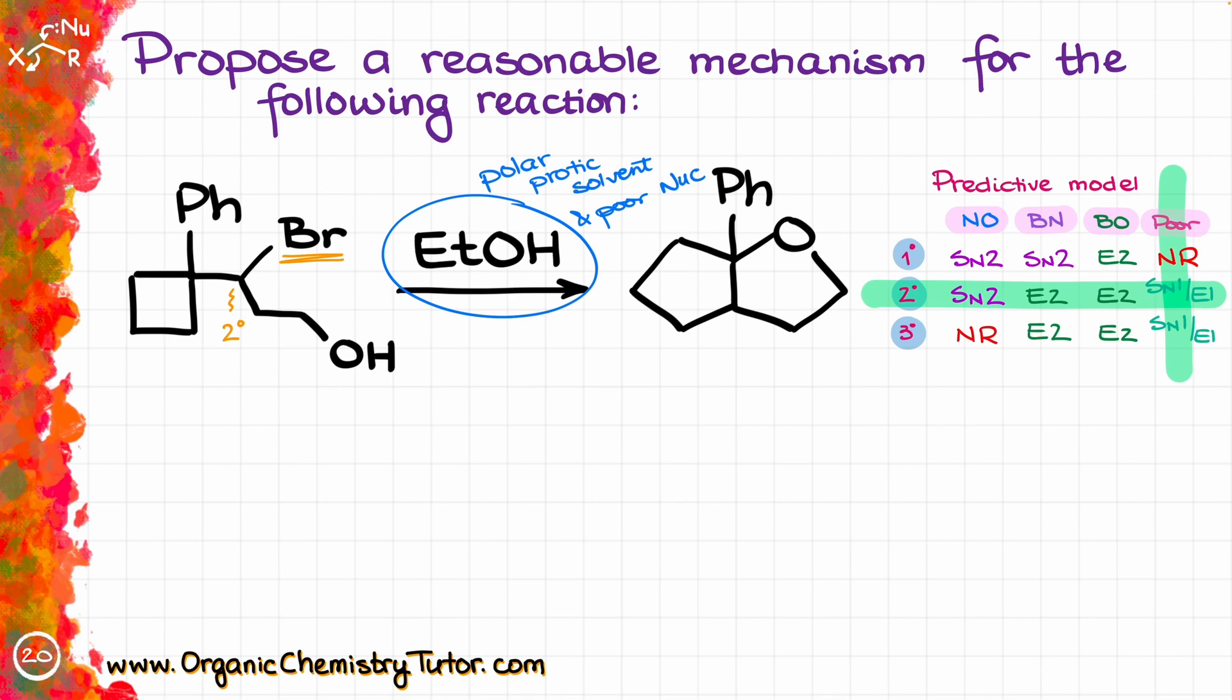In our case we have a secondary leaving group and poor base slash nucleophile, so we're looking at possible SN1 E1 style mechanism. Since we don't have any indication of elevated temperature, the most likely mechanism is SN1, which usually starts with leaving group dissociation.